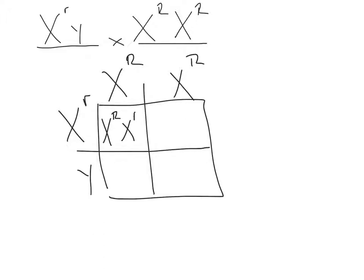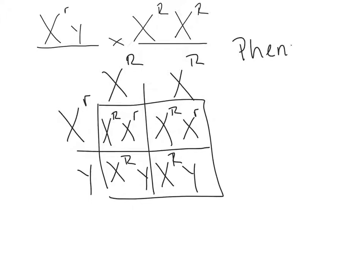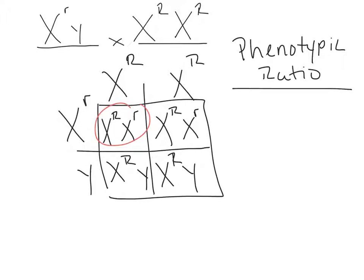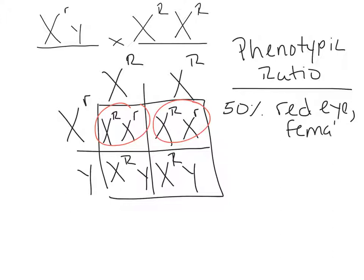Even in our Punnett square, we're going to have all of these X's and Y's. Now we go back and answer what is asked. This question was asking for the phenotypic ratio of the offspring. Remember that gender is part of your phenotype. In this case, we have two females and they are both red-eyed, so 50% red-eyed females. The other two boxes give us two males and both of them are also red-eyed, so 50% red-eyed males.